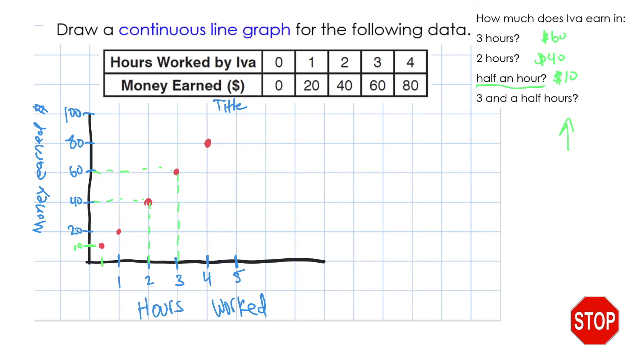Same goes with three and a half hours. Go up here and it's in between 60 and 80, which would be $70. We're just adding 10 for every half hour and there's $70. And the little dot would go here. So that's the advantage of this type of graph.